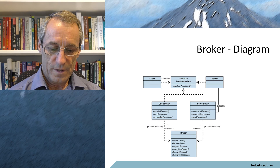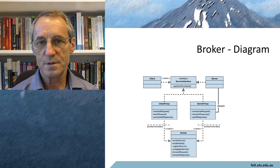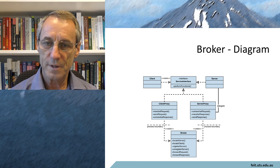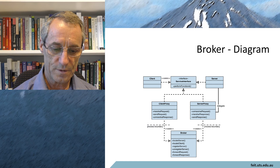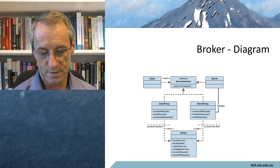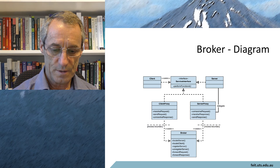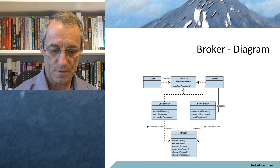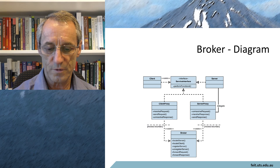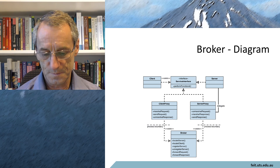The UML design you can see there doesn't quite explain the time sequence of things, merely the relationship for things. But you get a client and a service interface and a server. The service interface can call the broker to go find the services and connect the two to use.